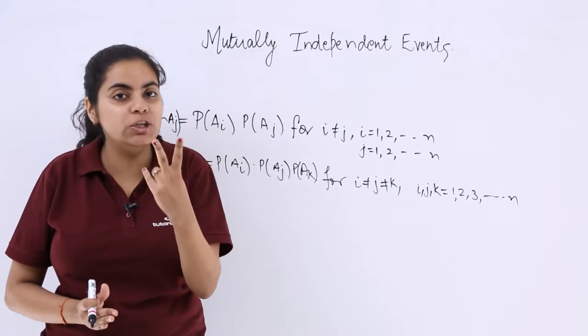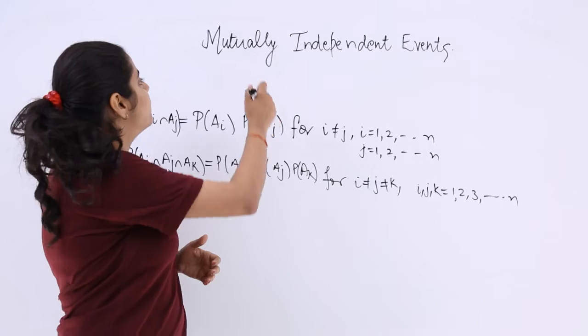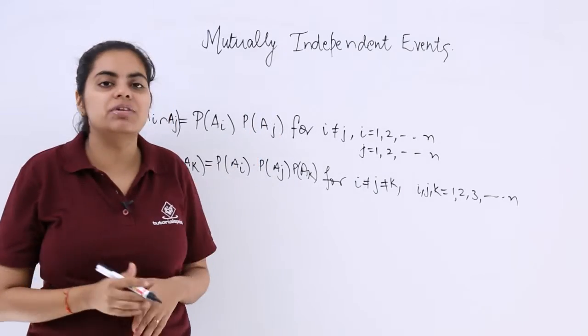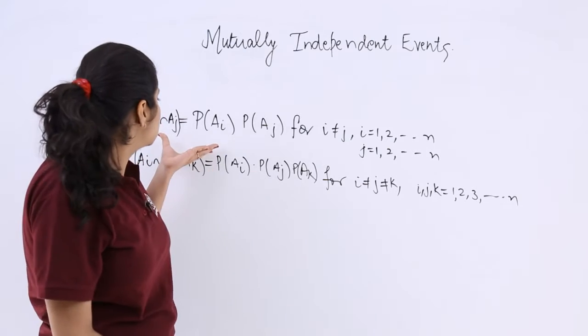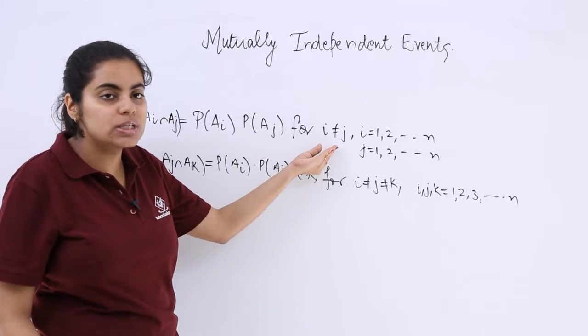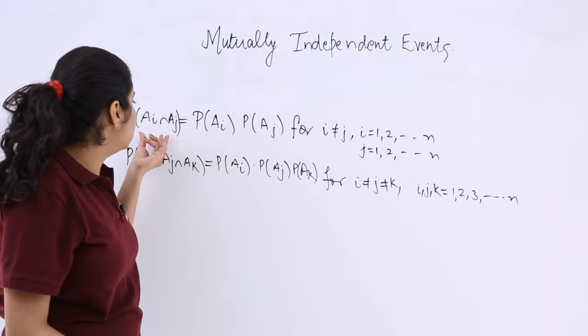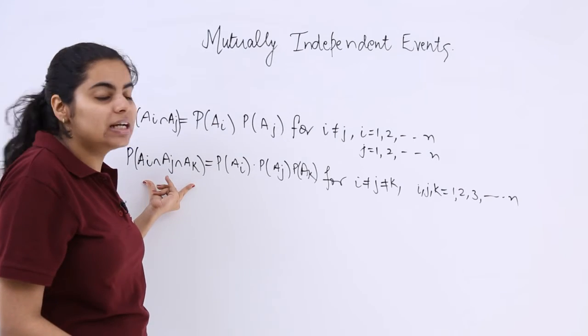In pairwise we had only two events into consideration, but this time the mutually independent events takes into account the extension case. That means the first case also follows and you can extend it to more than two events. For example, if there are three events,